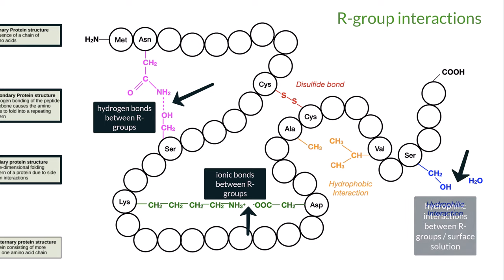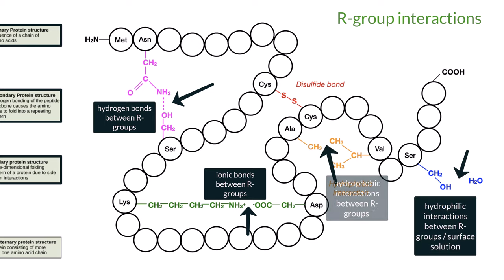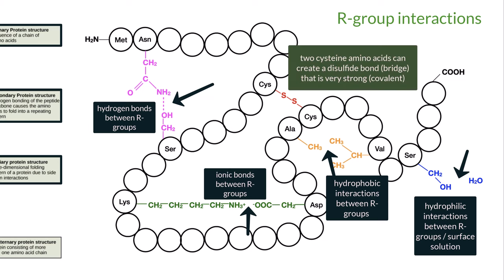Next, both hydrophilic and hydrophobic interactions can take place, as seen here. And lastly, a specific type of bond can be created between two cysteine amino acids, called a disulfide bond or disulfide bridge. This is the only example that you need to know the actual names of the amino acids for, which again are both cysteine.